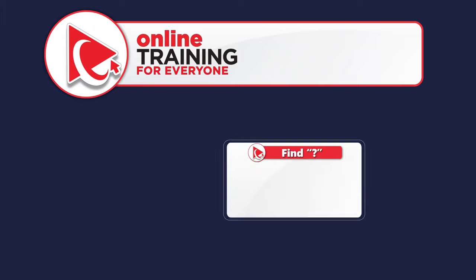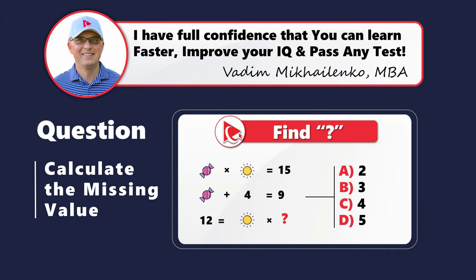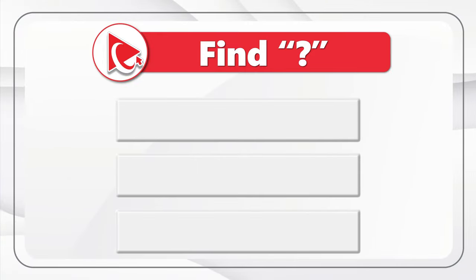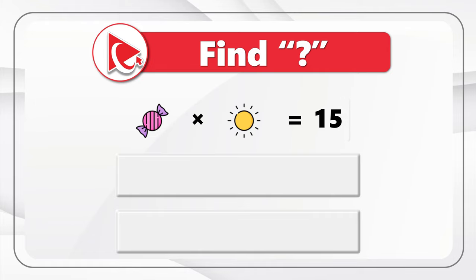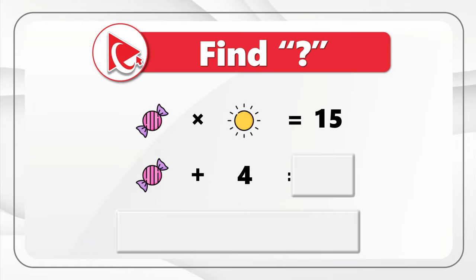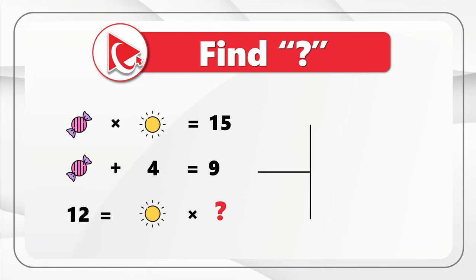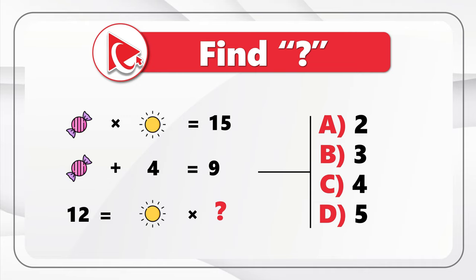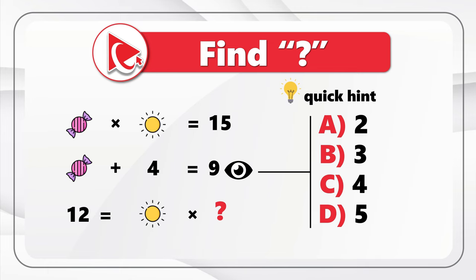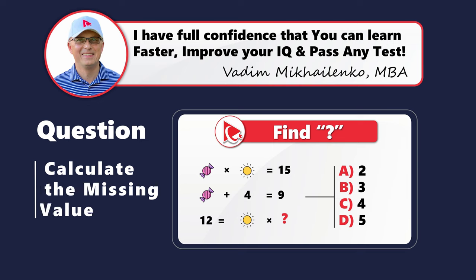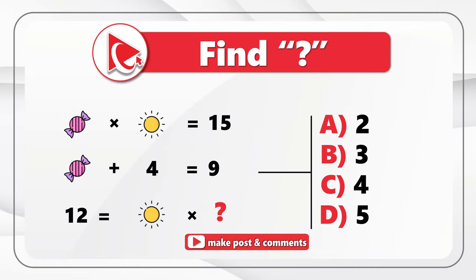This question tests your analytical skills and business math skills. You're presented with three expressions: candy × sun = 15; candy + 4 = 9; and 12 = sun × ?. You need to find the question mark from four choices: A) 2, B) 3, C) 4, D) 5. A quick hint: start with the middle expression. If you have a better way to solve it, please post in comments.